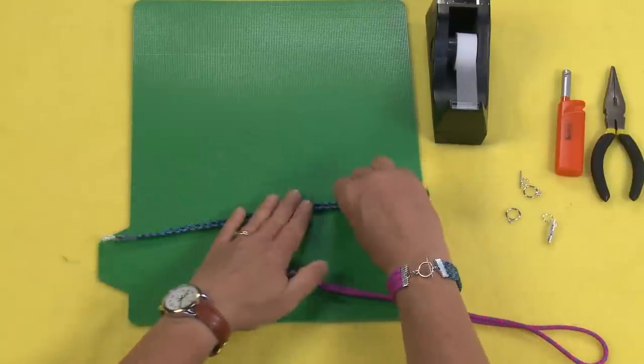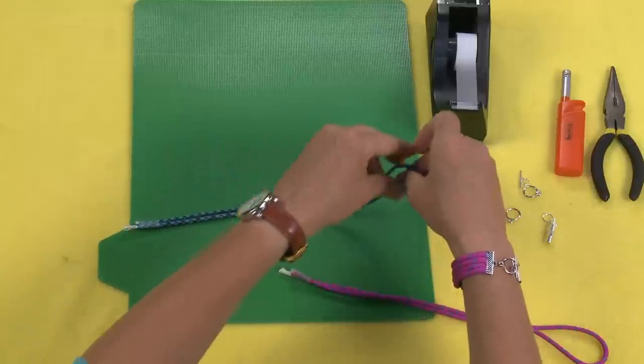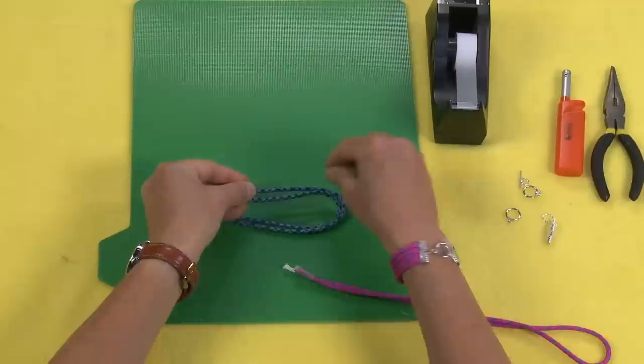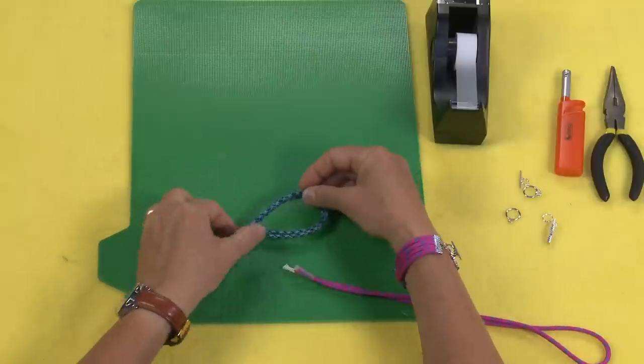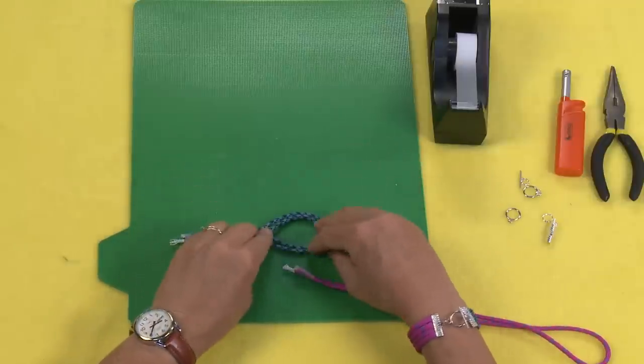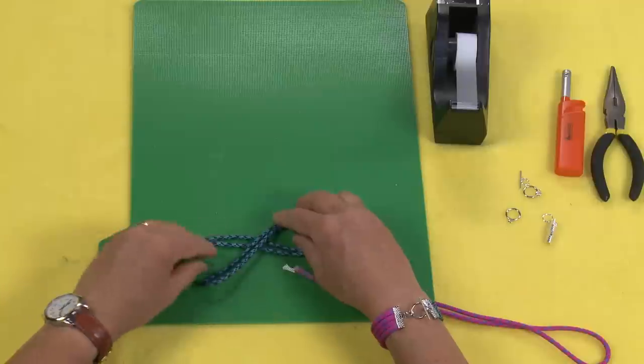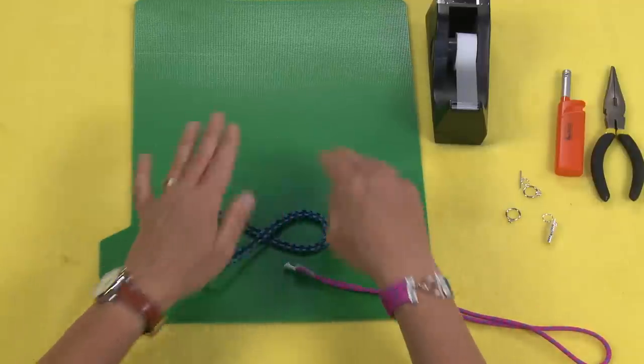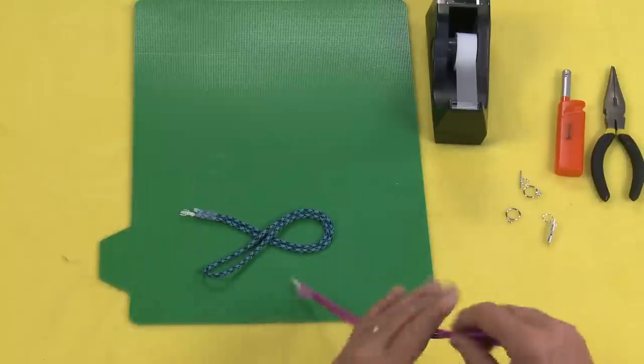I'm going to take my first string and lay it out, making sure that it lays nice and flat so that it's not bunching up on itself. I'm just going to make a little lasso. See how I have it laying flat? This is super important. It's not laying on top of each other. That is really important.